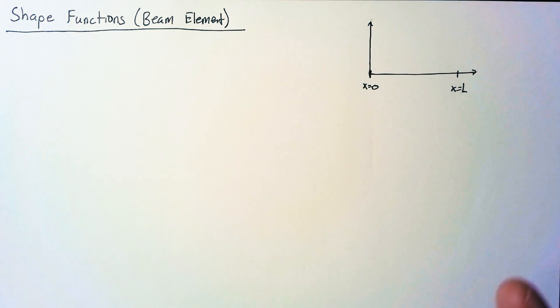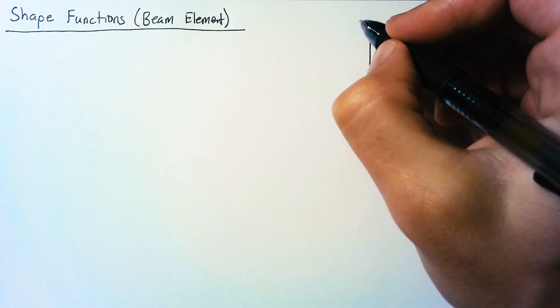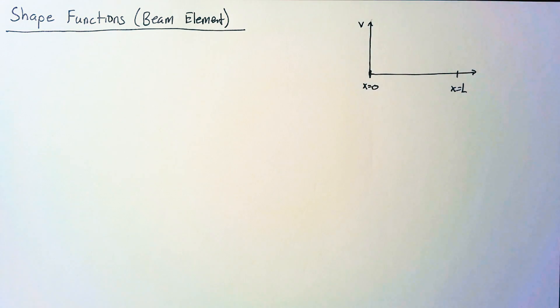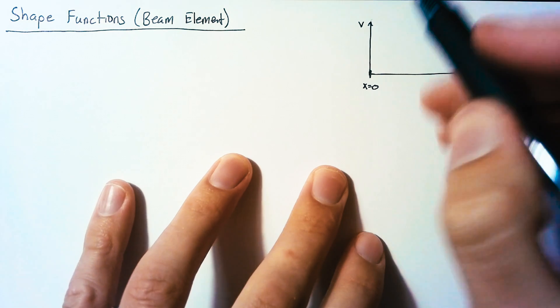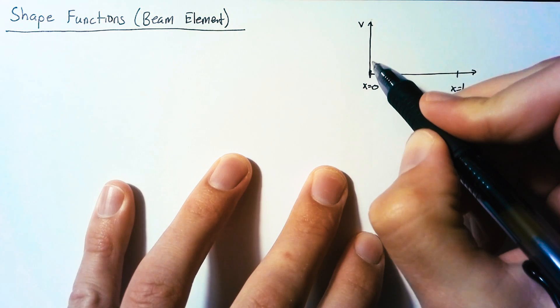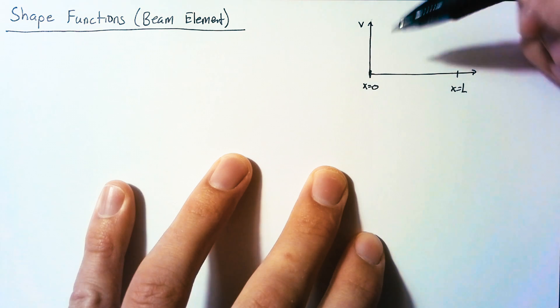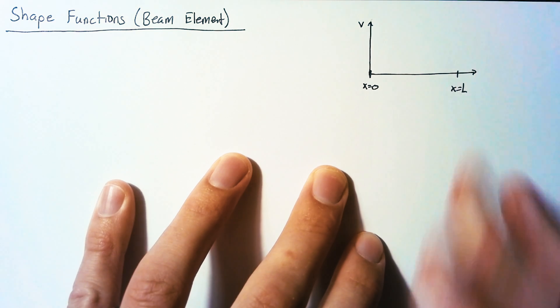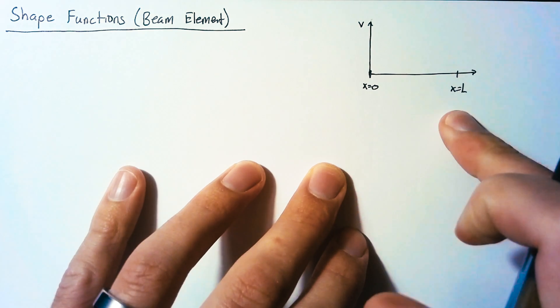For a bar or a truss, we just had the displacements and we were good. Now for a beam element, we're interested in both the displacement, the vertical displacement, and the slope that we have at x equals zero and x equals l.